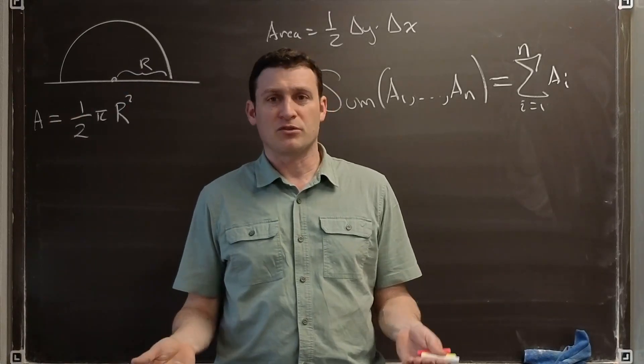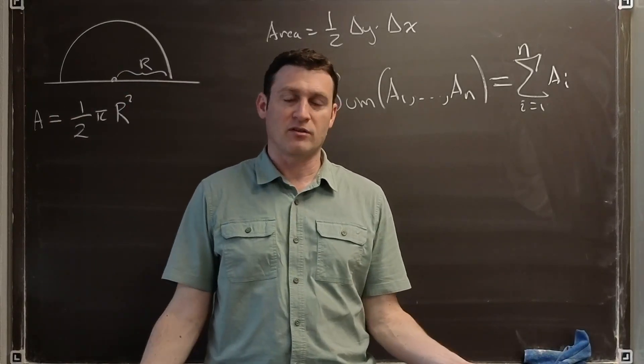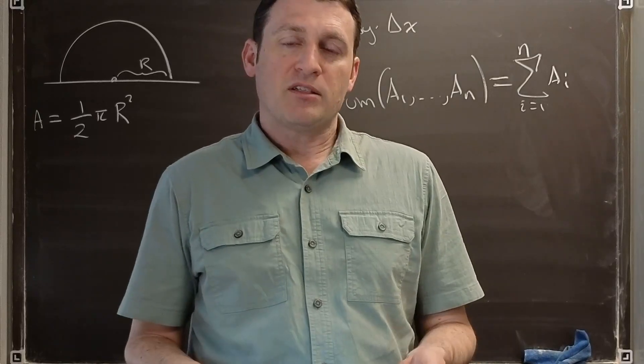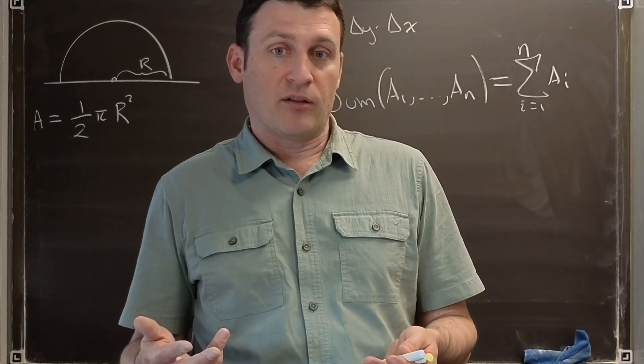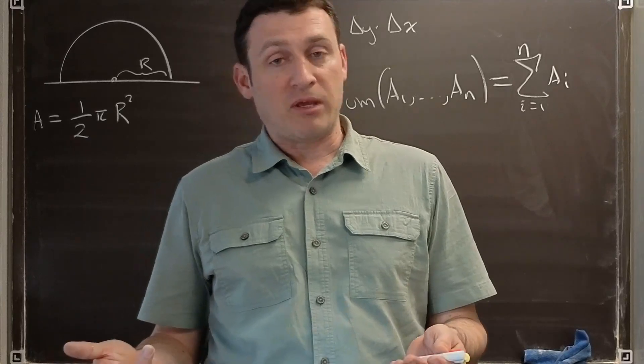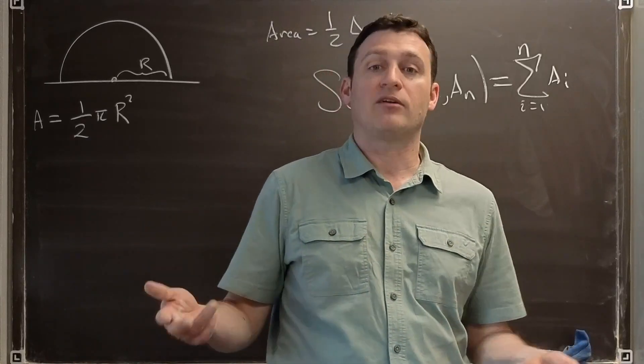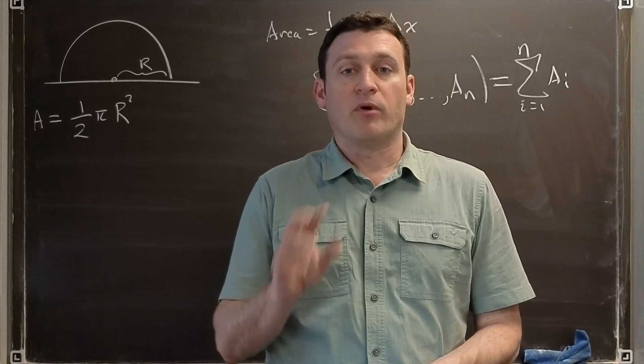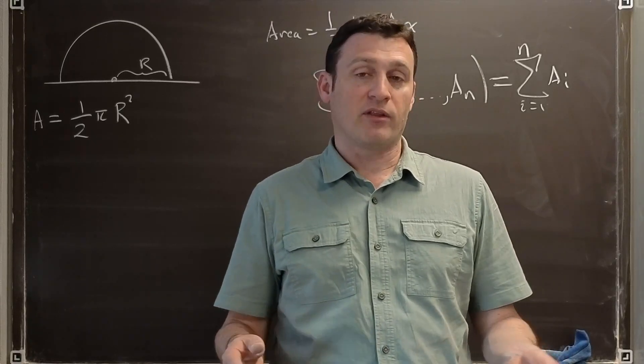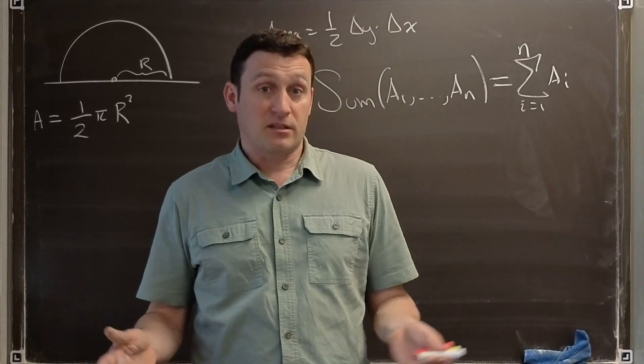However, how did the first person even come up with pi r squared as the area of a circle? And even though it's something we can look up, it'd be nice if we could understand if there's a technique out there that might be able to solve what area actually means in more context. That way, when we encounter shapes that no one's ever looked at before, we can still describe exactly how many resources are needed to cover that space. How much paint does it take to paint it?